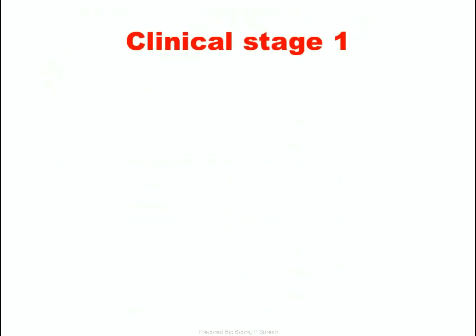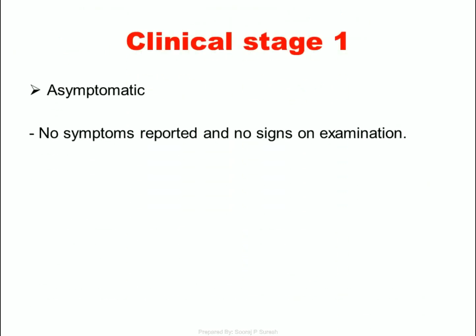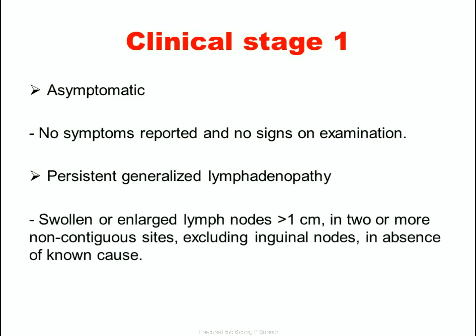Clinical Stage 1 – Asymptomatic: No symptoms reported and no signs on examination. Persistent generalized lymphadenopathy: swollen or enlarged lymph nodes greater than 1 cm in two or more non-contiguous sites, excluding inguinal nodes, in the absence of a known cause.